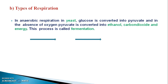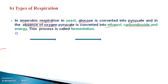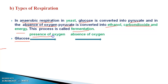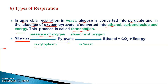In the case of yeast, anaerobic respiration is slightly different. In the yeast, glucose is converted into pyruvate in the cytoplasm, and in absence of oxygen, this pyruvate converts into ethanol, CO2, and generates less amount of energy. This process — the conversion of glucose into ethanol — is known as fermentation. Different types of materials can be fermented, and the end product of fermentation is alcohol.